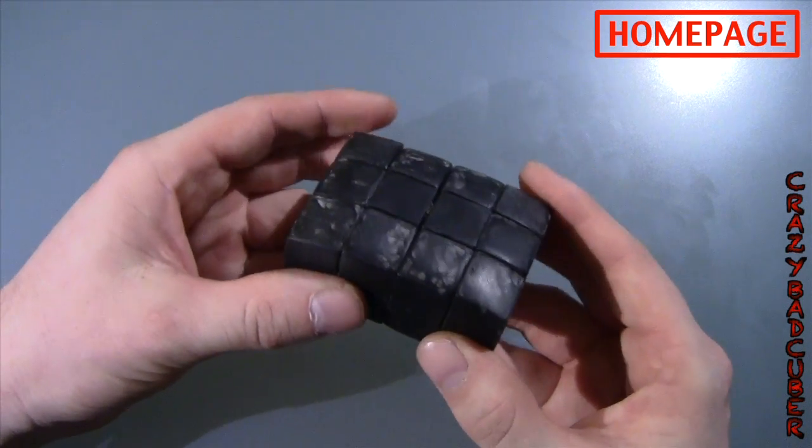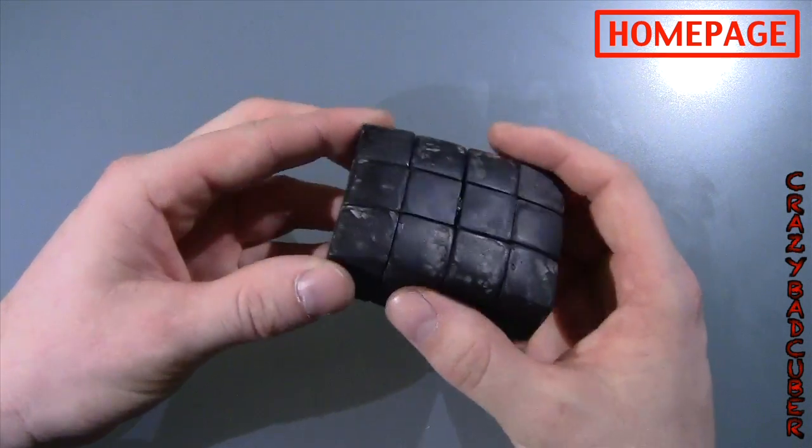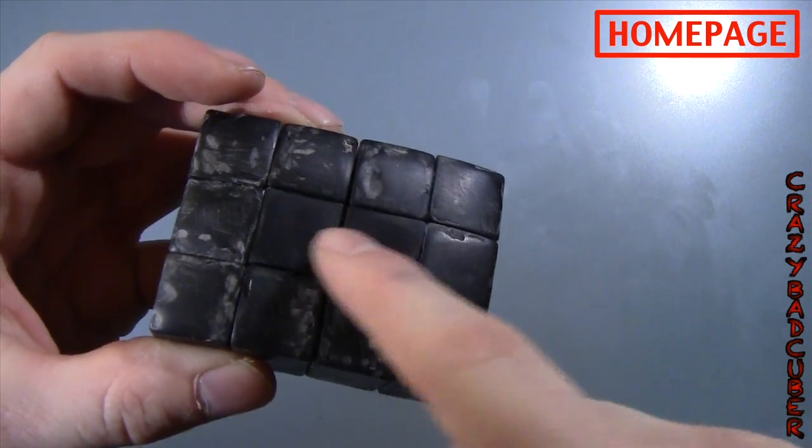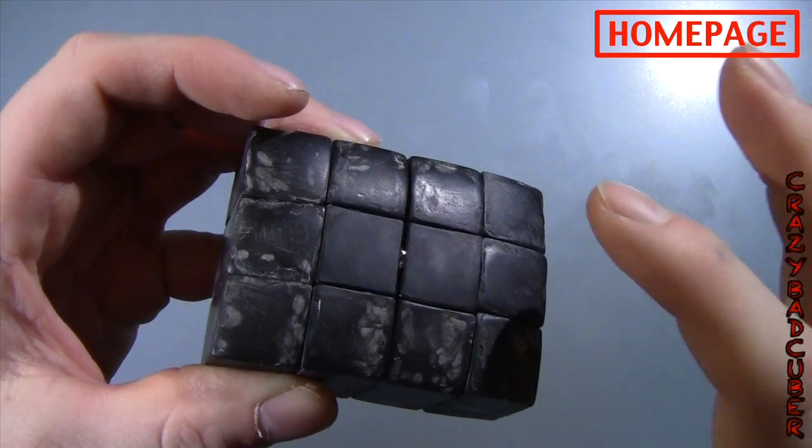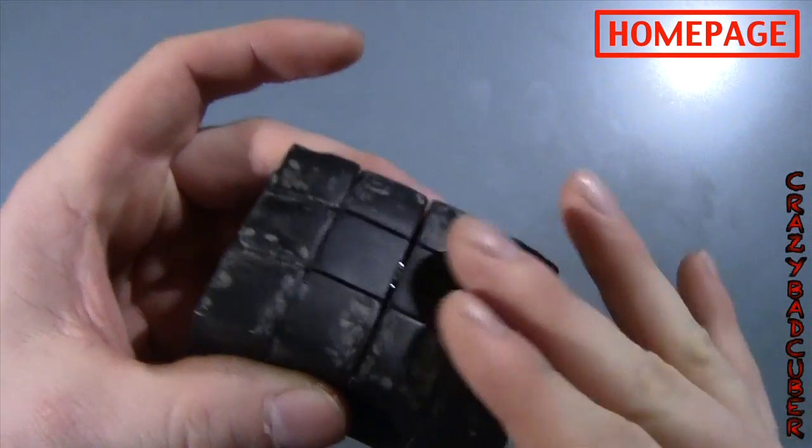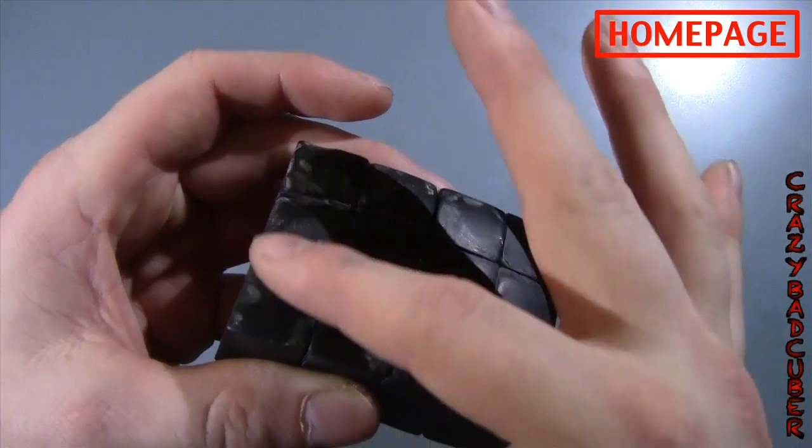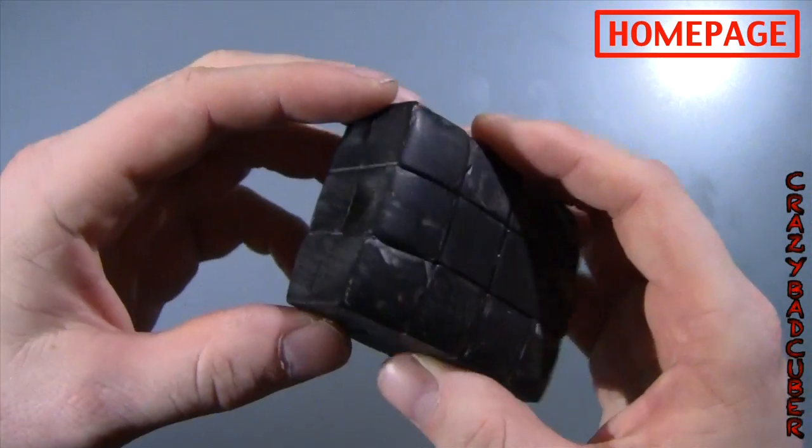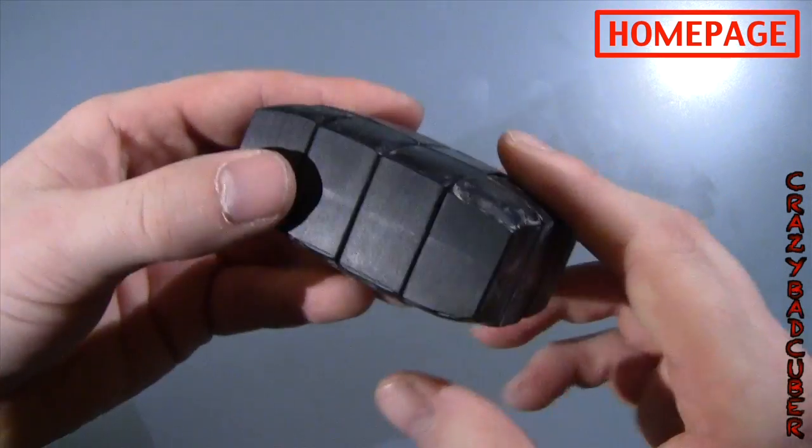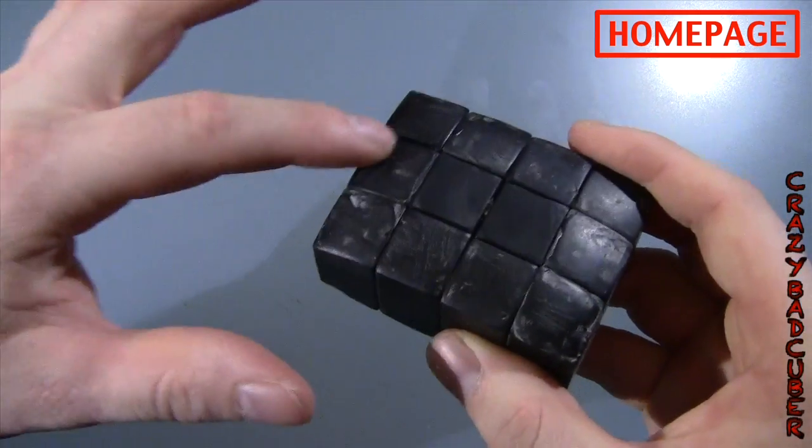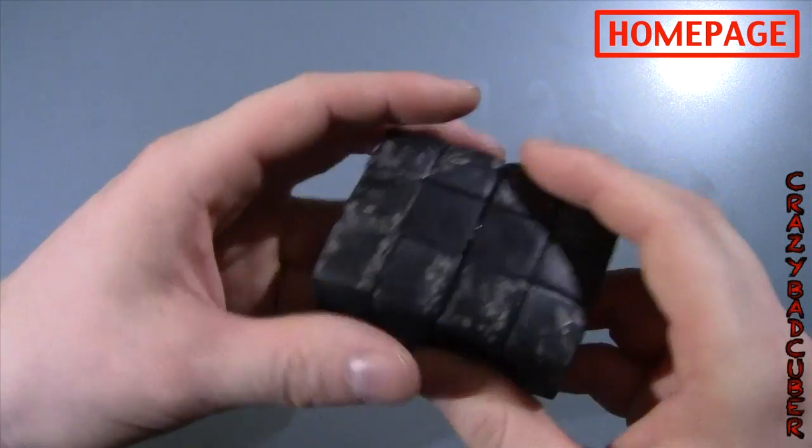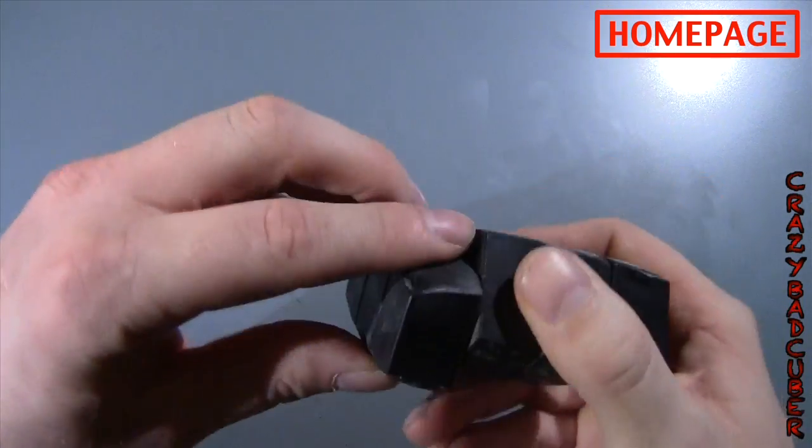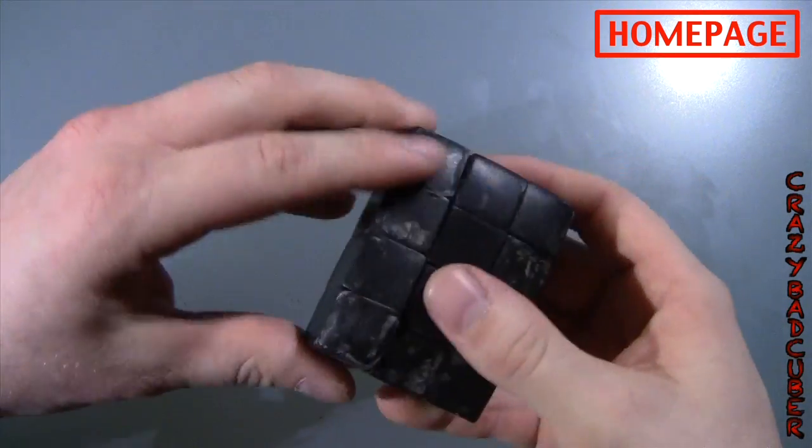This one here is going to be a 1x3x4 soap bar that I made. And I guess it's okay to tell people what it is already. The thing is, is that these two centers here, you can't shape mod them. So what I'm going to do is I'm going to extend everything in an oval shape here. And same with the other side. As you can see, I've glued these together. This is made out of an MF8 2x3x4 turned into a 1x3x4. And what I'm going to do is I'm going to make an extension, an oval shape on both sides. And then I'm just going to round it all just like a bar of soap. And then I'm going to sticker it. And that's going to be Crazy Bad Cubers 1x3x4 soap bar.